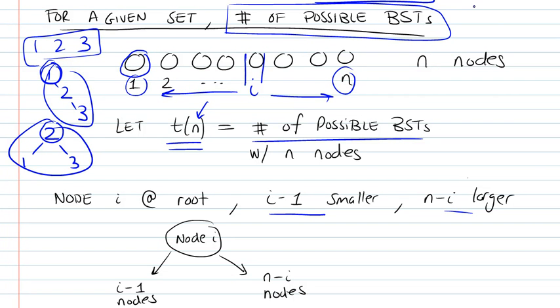We left off in the previous video talking about the number of possible BST representations for a given set of elements. If this was our set of elements and we had ordered them, they have to be unique of course, we can't have duplicate elements in a BST, and we had ordered them in ascending order.